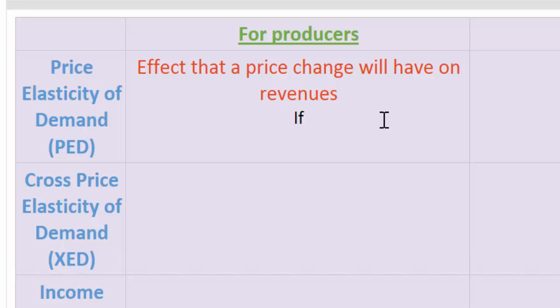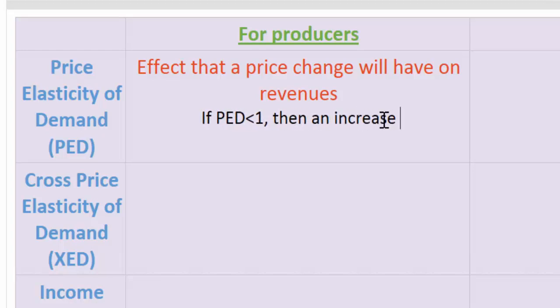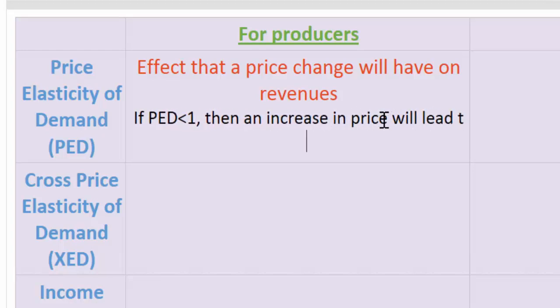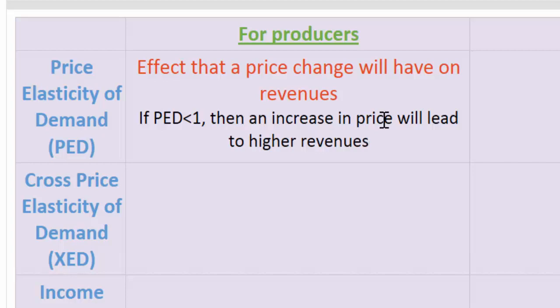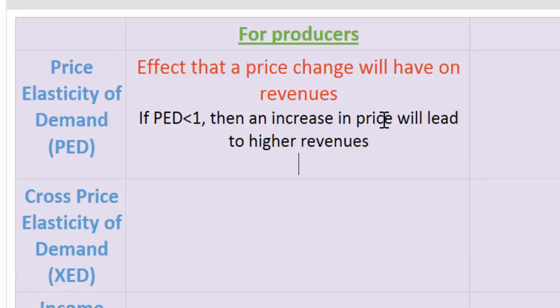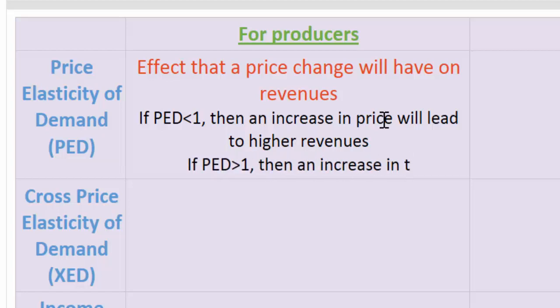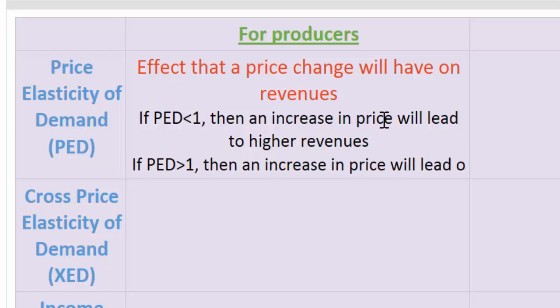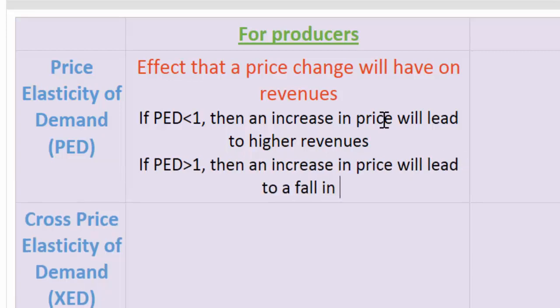We learned that if PED is less than 1 — in other words, if demand is inelastic — then an increase in price will lead to higher revenues. Of course, this information is very useful for businesses to know. On the other hand, they should know that if demand is elastic, then an increase in price will lead to a fall in revenues.